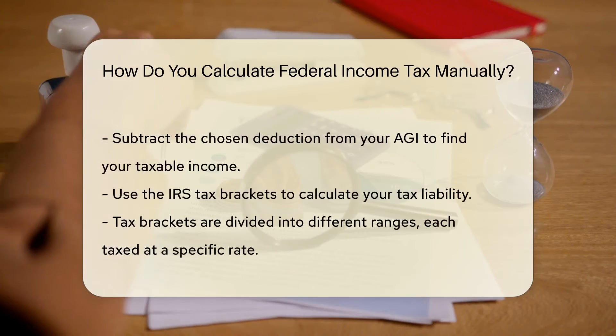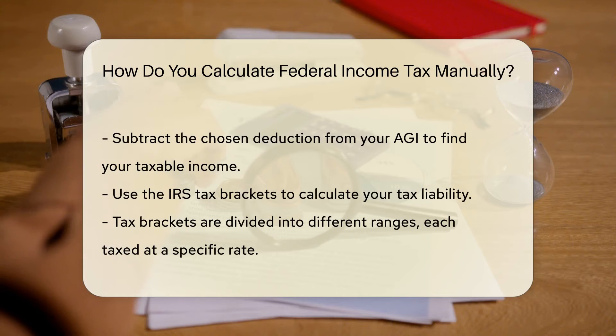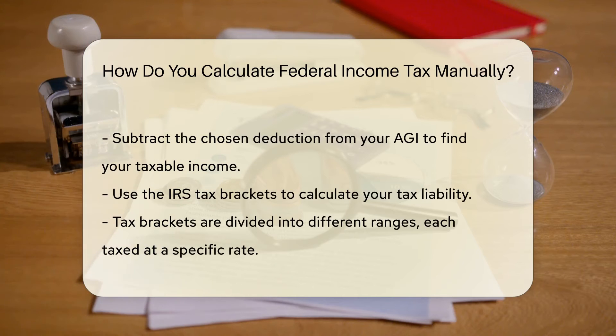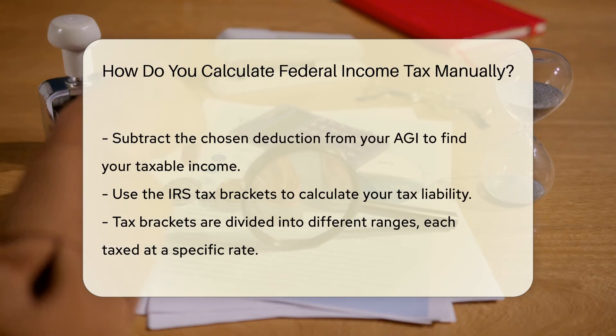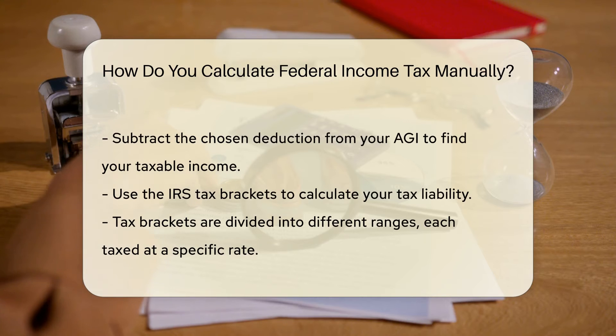Next, determine if you will take the standard deduction or itemize your deductions. Subtract the chosen deduction from your AGI to find your taxable income.